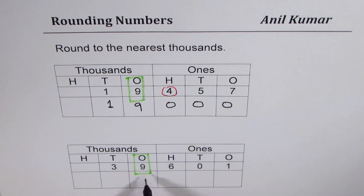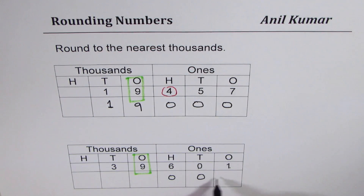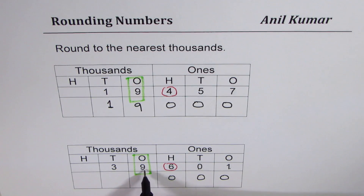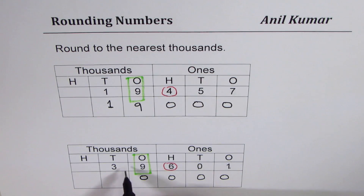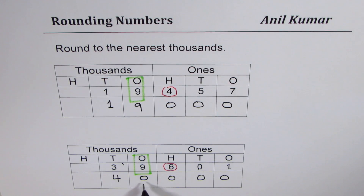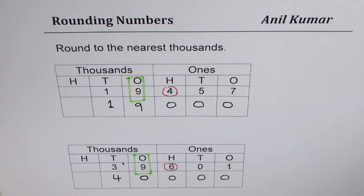There is one exception here: the number is 39,601. When you round to thousands, we get three zeros. The thousands digit is nine; look to its right — it is six, which is five or more, so it rounds higher. Nine becomes ten: write zero and carry one. That one gets added to three, giving forty. So 39,601 rounds to 40,000.